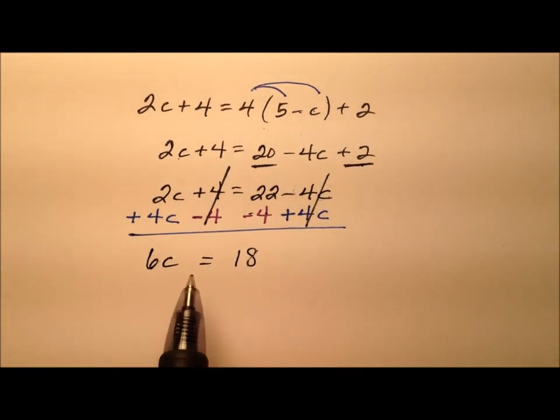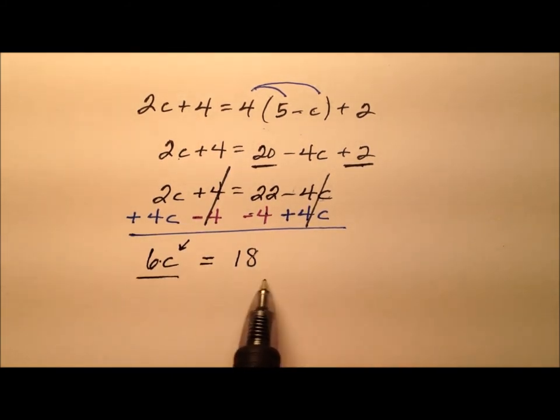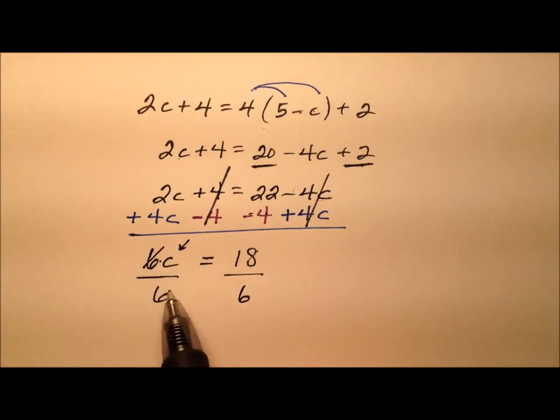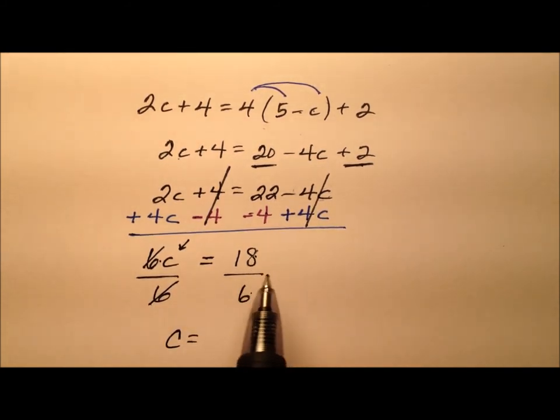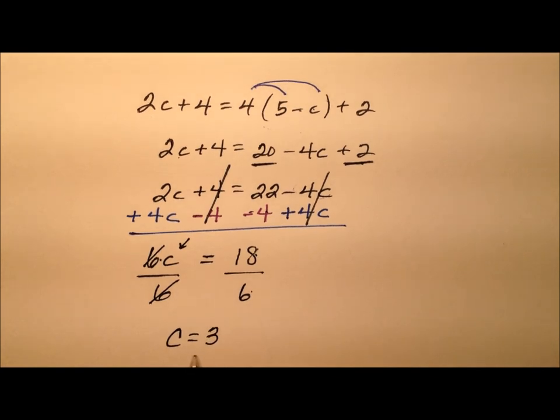Alrighty. So 6 times our variable c. And so it looks like in order to get this c all by itself, we need to do the inverse operation of multiplication. And we need to divide both sides by 6. And then of course, that's using the division property of equality. So it looks like c will be 18 divided by 6, which is 3.